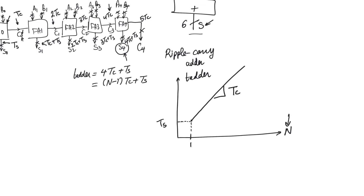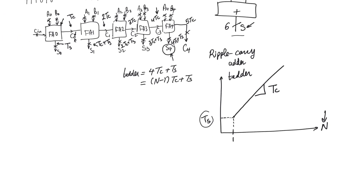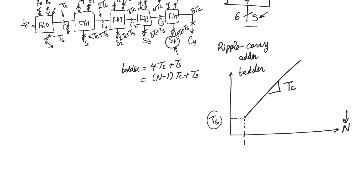So for a very large number of input bits — which is the case in most modern processors that use wide buses — the carry delay is going to dominate total delay, because it represents the slope of the curve and thus will affect the total delay more than TS, which represents the intercept. So the main thing here is that we have linear delay. The delay of this adder is O(n) with the number of bits. And the main question is, how can we design faster adders?